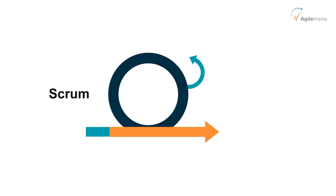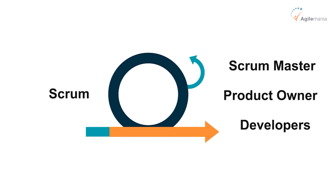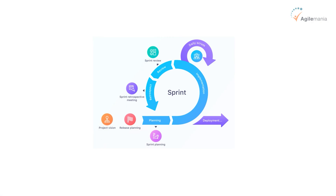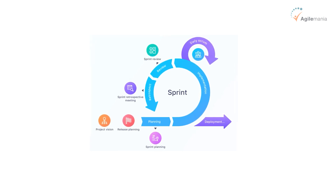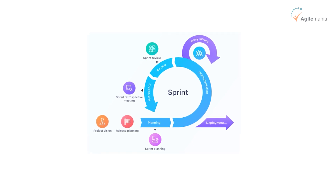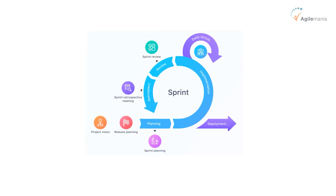In Scrum, you have three roles: a Scrum Master, a Product Owner, and developers. It's based on empiricism, which means you learn from your experience. It has three pillars: inspection, adaptation, and transparency. And then you have a sprint — a container for different ceremonies or events, which are: daily Scrum, sprint planning, sprint reviews, sprint retrospectives, and backlog refinement, which gives you the product backlog and so forth.